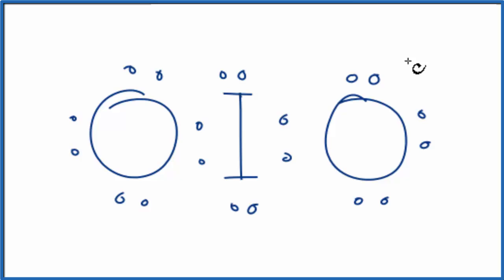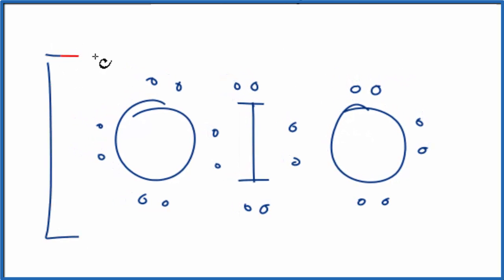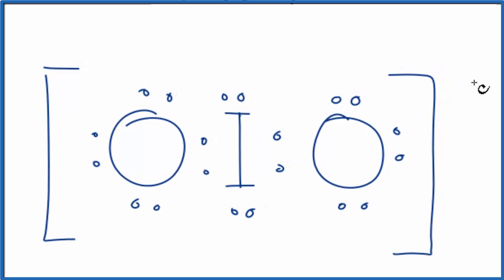This seems like a pretty good Lewis structure. Everything has an octet. We could put brackets around it to show that it's an ion and put a negative sign.